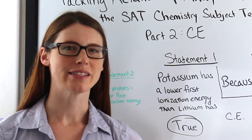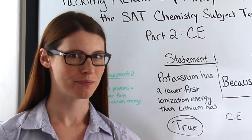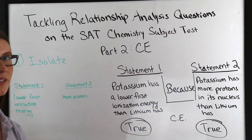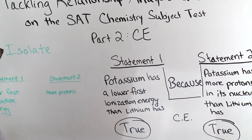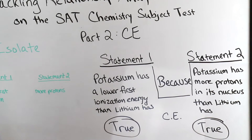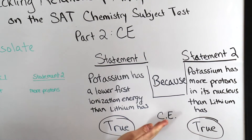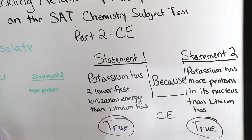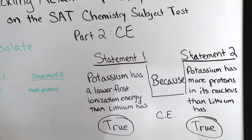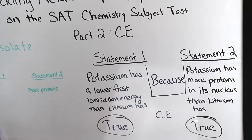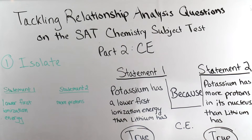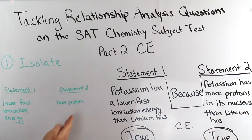Now let's look at another example and see why isolating is so important. Here's an example from the College Board website. Statement one: potassium has a lower first ionization energy than lithium has — this statement is true. Statement two: potassium has more protons in its nucleus than lithium has — this is also true. Now let's do our steps and evaluate to see if statement two is a correct explanation for statement one. Step one is to isolate. Our phenomenon from statement one is lower first ionization energy. We're looking for an explanation that directly explains this. Statement two has the explanation of more protons.